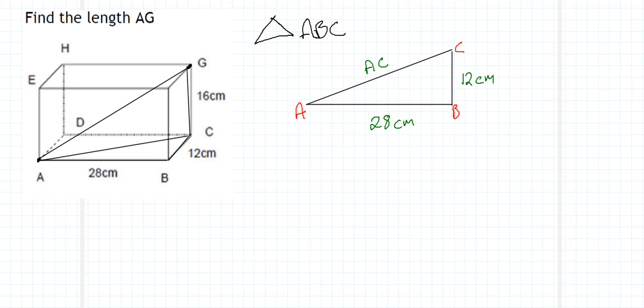So that's quite simply a case of using our Pythagorean theorem. And we know that AC is the hypotenuse. So it's going to be equal to 28 squared plus 12 squared. And that's going to give us, when we work that through and put that into a calculator, that gives us that AC is going to be the square root of 928. So therefore, AC will equal 30.46.